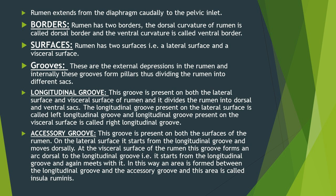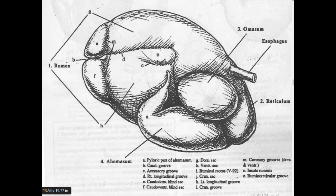Rumen has two borders — dorsal border and ventral border — and two surfaces: lateral surface and visceral surface. The visceral surface faces the organs of the abdominal cavity. Externally, the rumen contains many depressions; internally these depressions are identified as pillars of the rumen. The external depressions are called grooves, and internally these grooves are identified as pillars. The function of these grooves is to divide the rumen into different sacs.